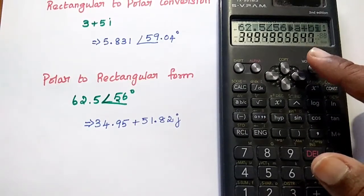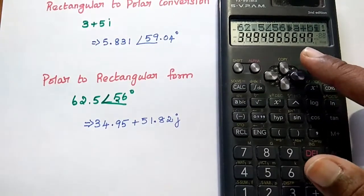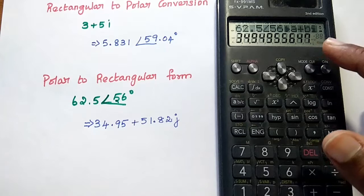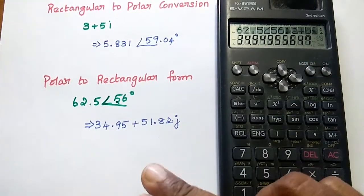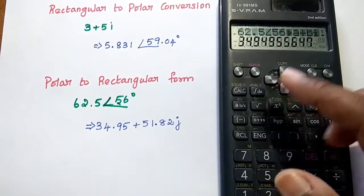We can see the real term as 34.94956 something. We can take the first two decimal values, 34.95.